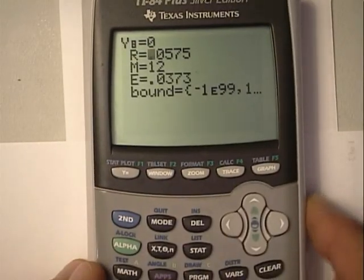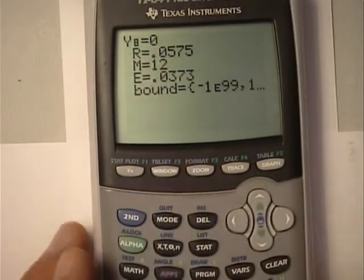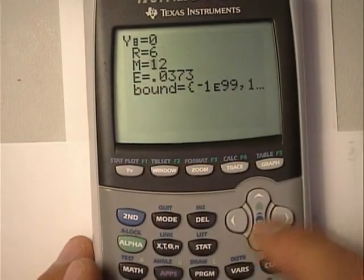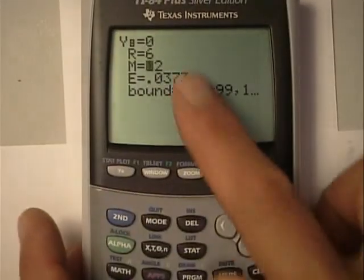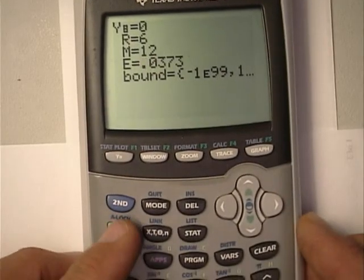Okay, looks good. The parameters I expect are there. R is the nominal rate, which happens to be 6% in this problem, and it's compounded monthly, so 12 is correct, and all I got to do is do alpha solve on the E there.